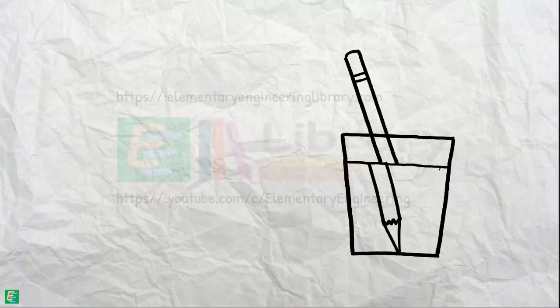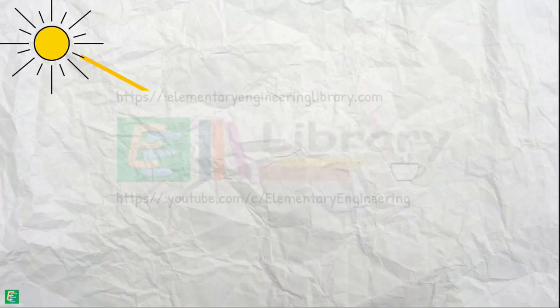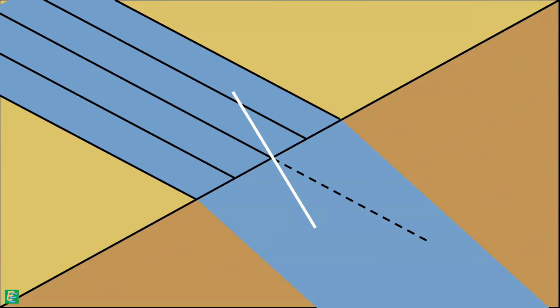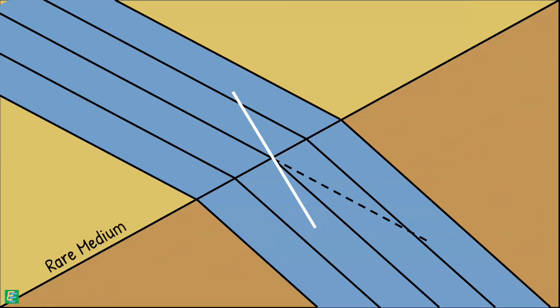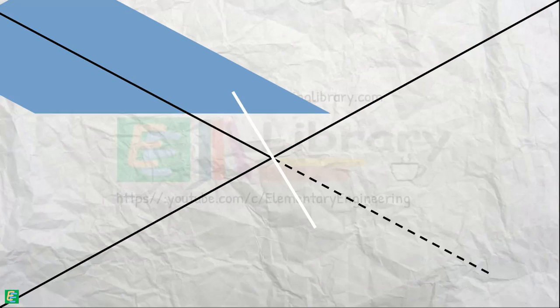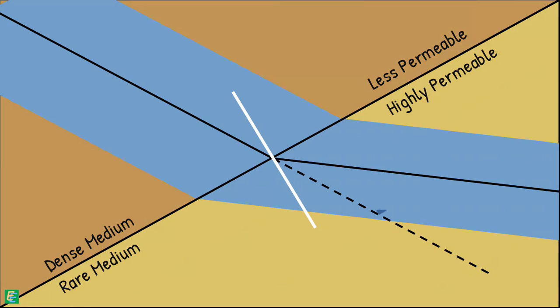The phenomenon of deflection of flow lines is somewhat similar to the refraction of light rays. When light enters from a rare medium to a dense medium it gets deflected towards the normal. Similarly, flow lines get deflected towards the normal if the flow is from a rare medium to a dense medium — that means when flow is from a high permeable medium to a low permeable medium. When water flows from a low permeable medium to a high permeability medium, it gets deflected away from the normal.